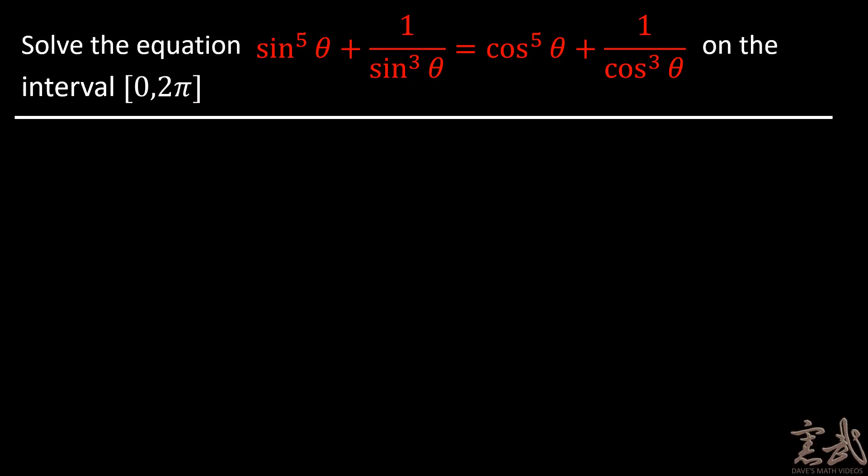So let's jump right into solving this equation. I want to find all the values of theta for which this equation holds. This is sine of theta to the fifth power plus 1 over the sine of theta cubed is equal to the cosine of theta to the fifth power plus 1 over the cosine of theta cubed. And we'll do this on the interval zero to 2 pi.